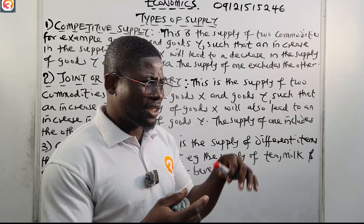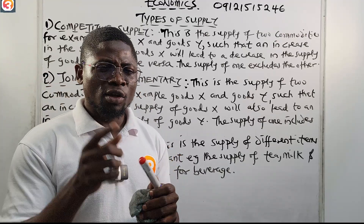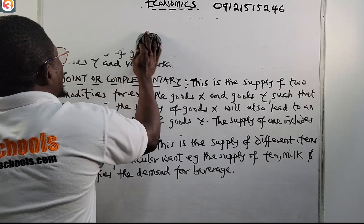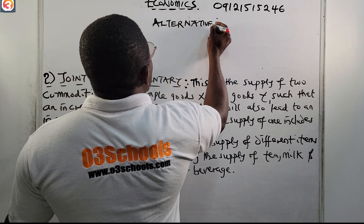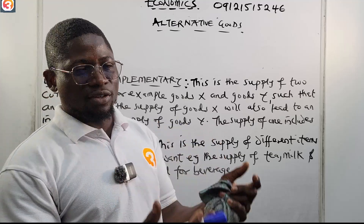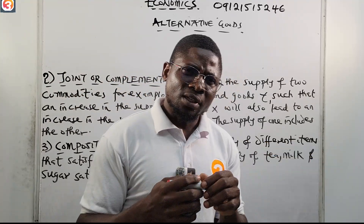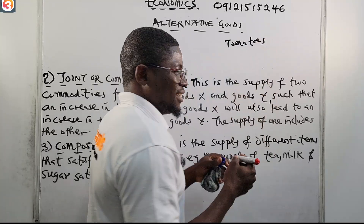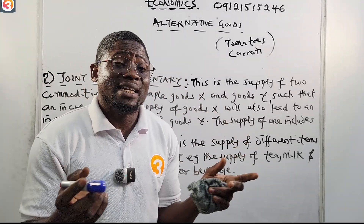For competitive supply, the term we use is 'alternative goods.' Competitive goods in competitive supply are known as alternative goods or products — goods or products that a firm could make with their available resources. For example, a farmer may decide to grow tomatoes or decide to grow carrots, using essentially the same factors of production and the fixed capital available to the farmer.